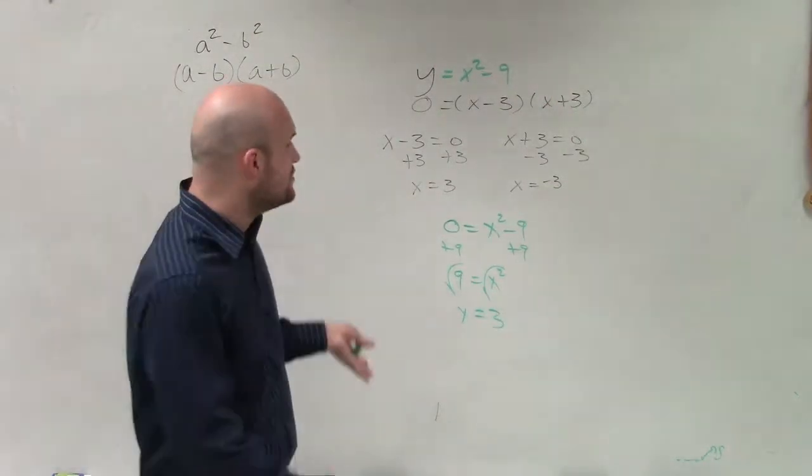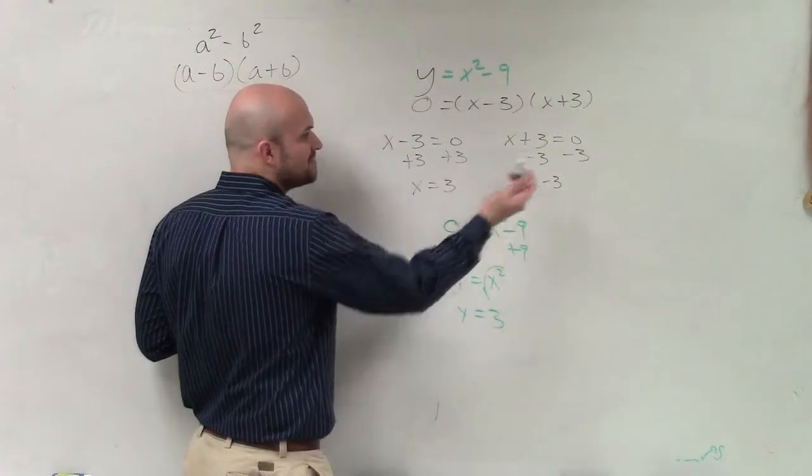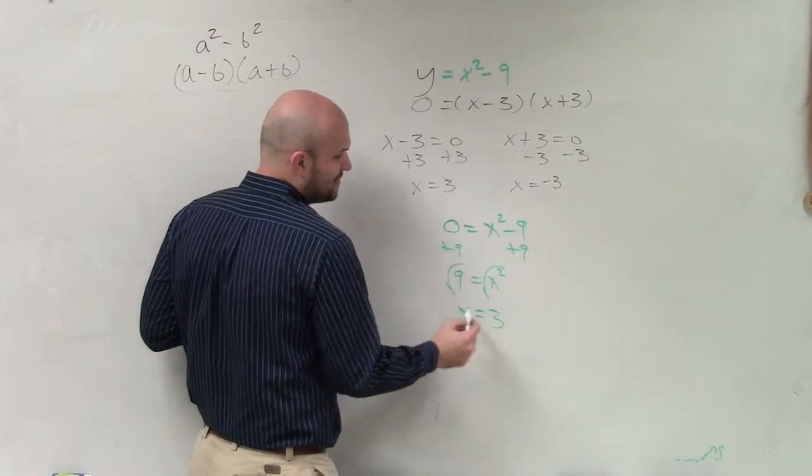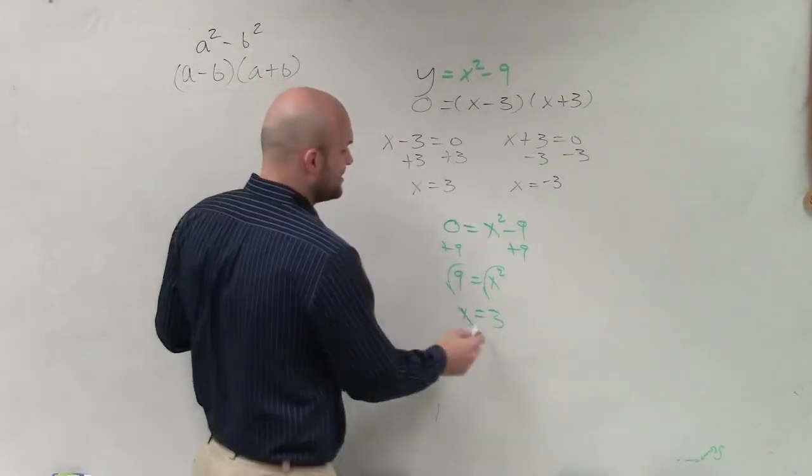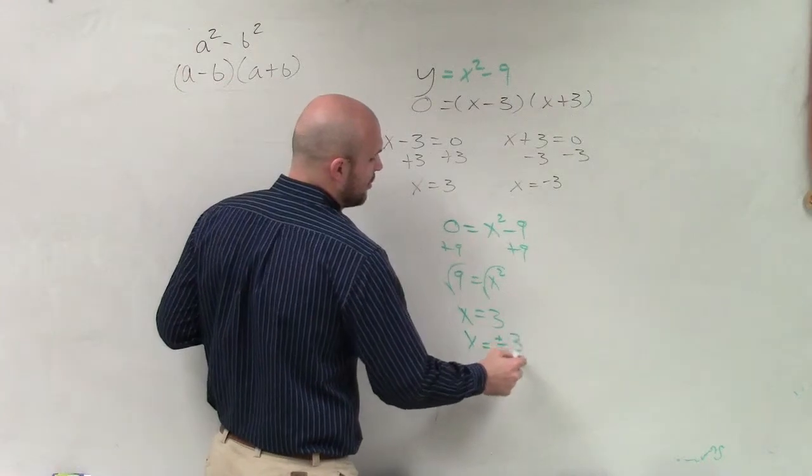You've got to be careful with that, because as you notice, by solving it using the difference of two squares, you can see it's positive 3 and negative 3. So even though this lesson isn't on the square root method, notice that whenever you introduce the square root, our solution is going to be plus or minus 3.